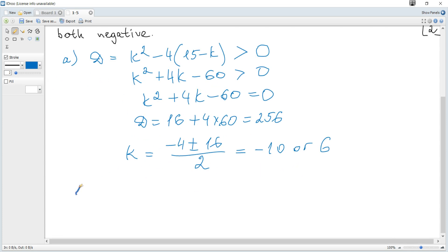Let's check using the sum and product rule. Sum is -b/a and product is c/a. That's -4/1 and product is -60.